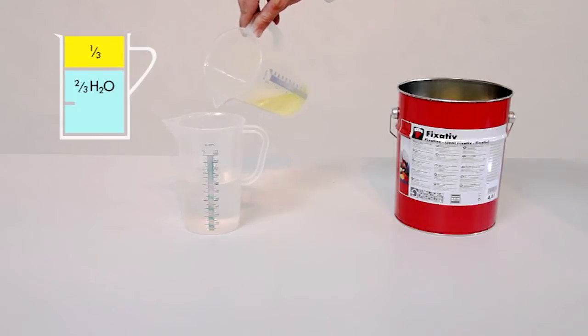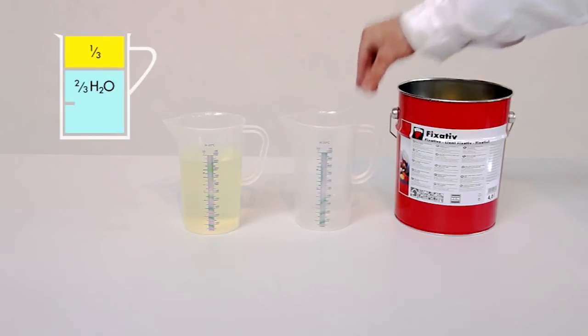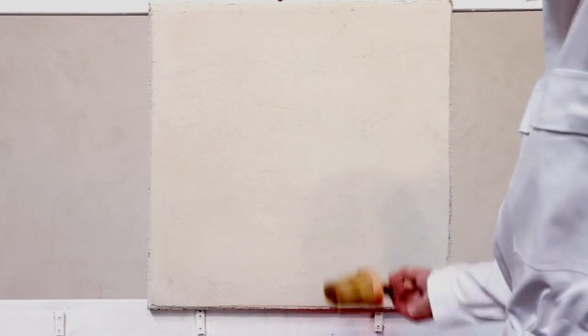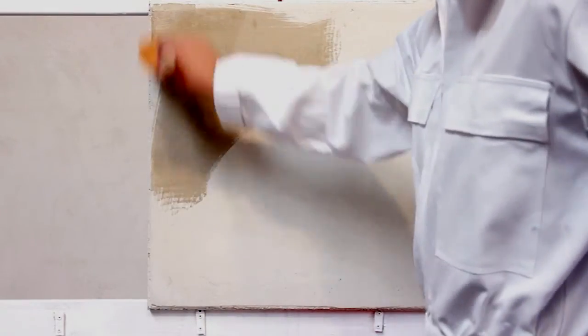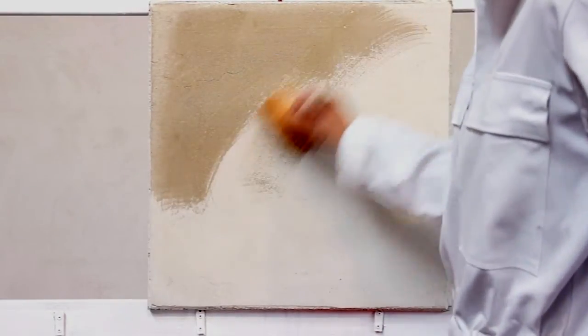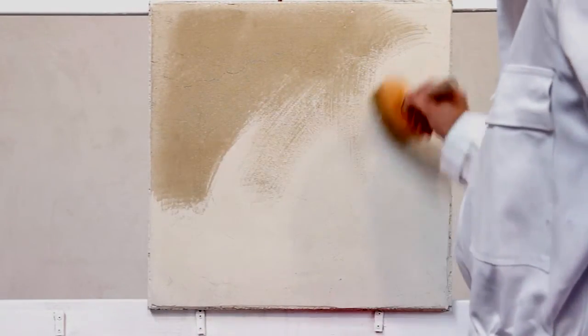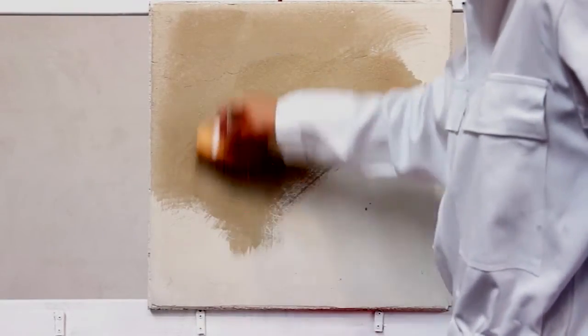The substrate can then be prepared with this mixture. Apply the fixative and water mixture liberally to the plaster surfaces. This will require a drying time of at least 12 hours before applying the base coat.